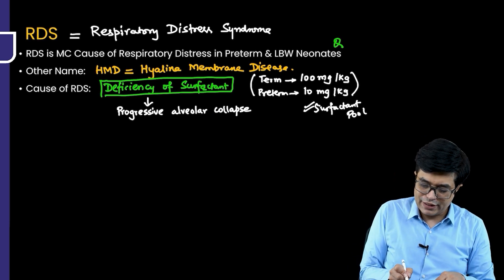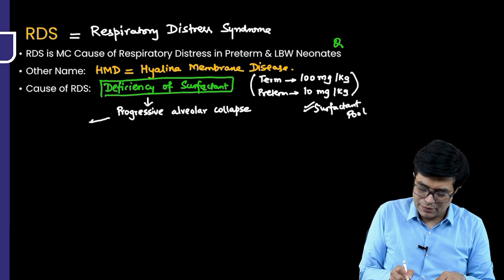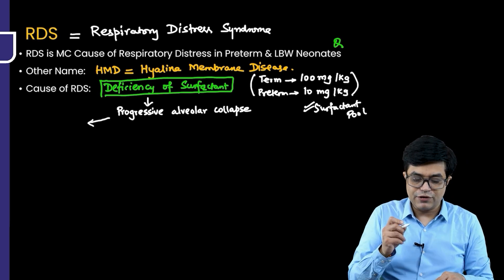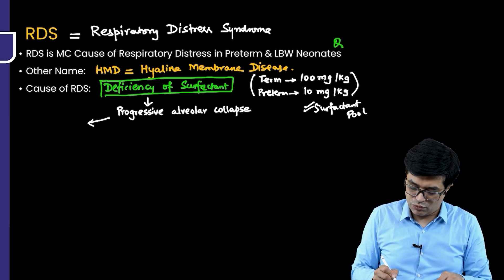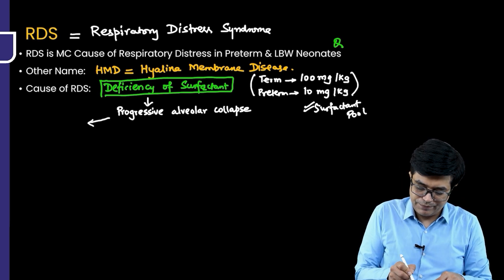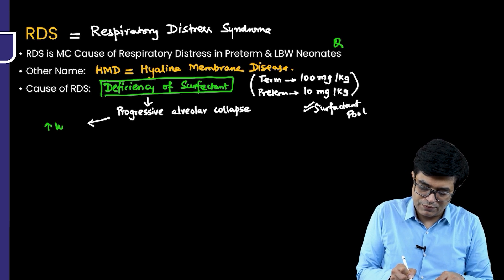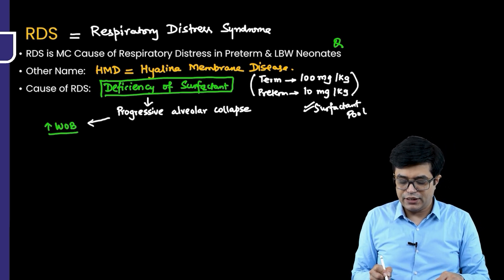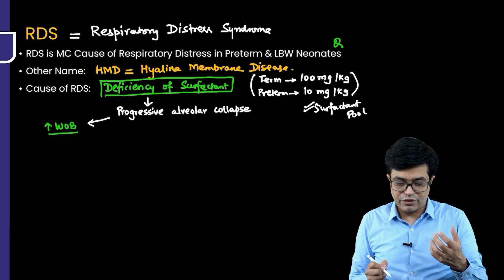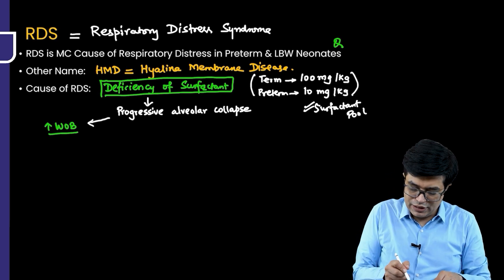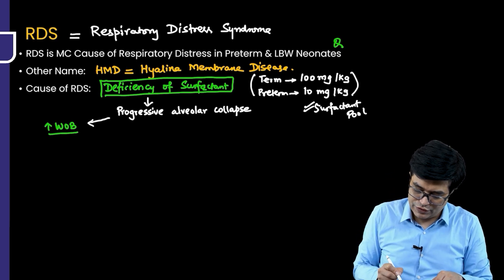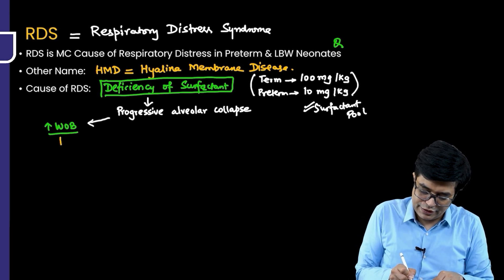If there is progressive alveolar collapse, three things will happen. First, there will be increased work of breathing, which produces tachypnea and chest retractions. This will then lead to the development of respiratory fatigue in the patient.